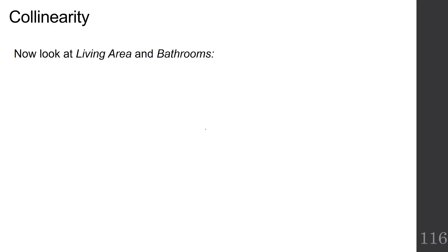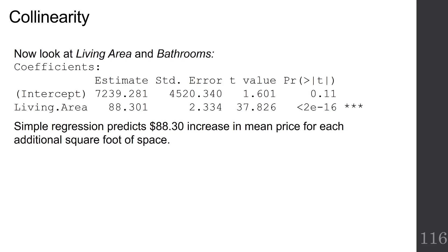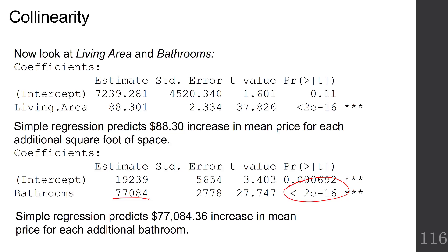Let's take a look at the same phenomenon with the same data set. First, we're going to do the simple regression on living area. It predicts $88.30 increase in mean price for each additional square foot of space. And now let's look at the simple linear regression for the number of bathrooms. Again, a positive coefficient, highly significant. Simple regression predicts $77,084.36 increase in mean price for each additional bathroom.